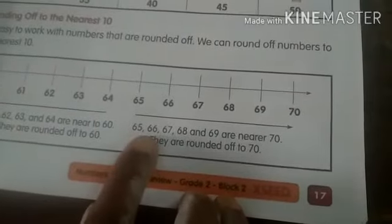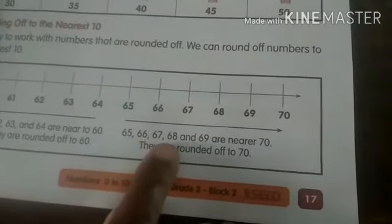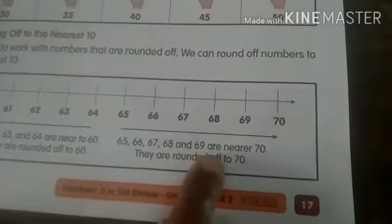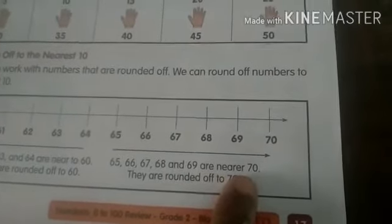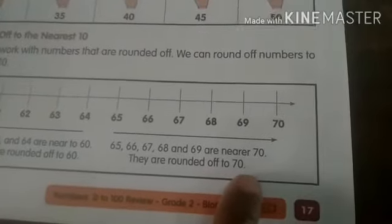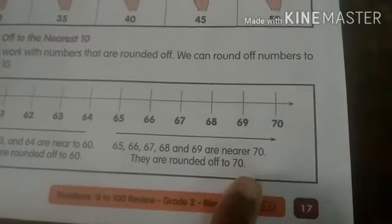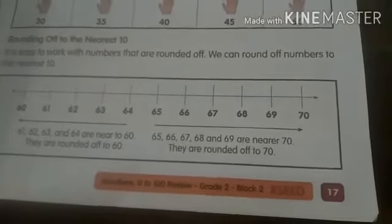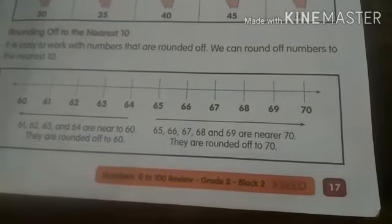65, 66, 67, 68, and 69 are nearer 70. They are rounded off to 70 children. Now open your workbooks.